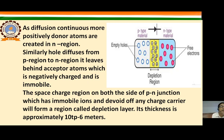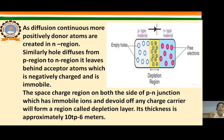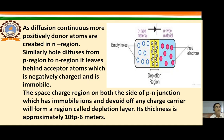Similarly, when holes diffuse from the p-region to the n-region, they leave behind acceptor atoms which are negatively charged and immobile. When impurity is added and holes are created, the atom that accepts an electron becomes negatively charged and acts as an acceptor.